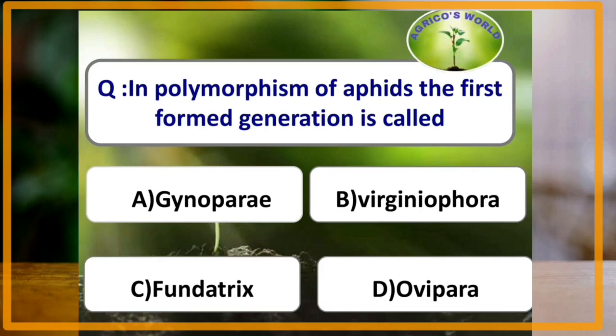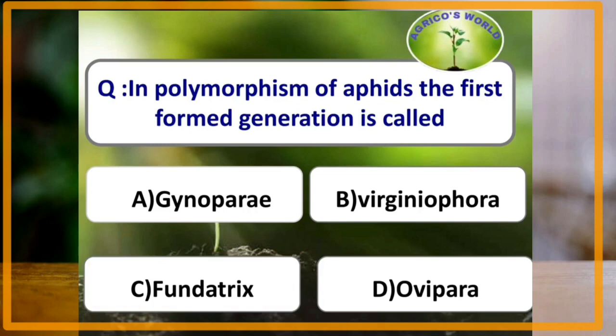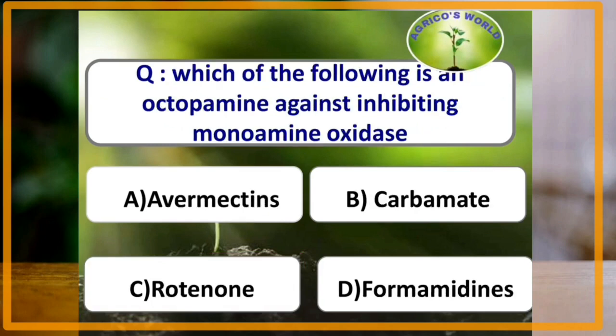In polymorphism of aphids, the first form generation is called fundatrix. Formamidine is an octopamine agonist inhibiting monoamine oxidase.